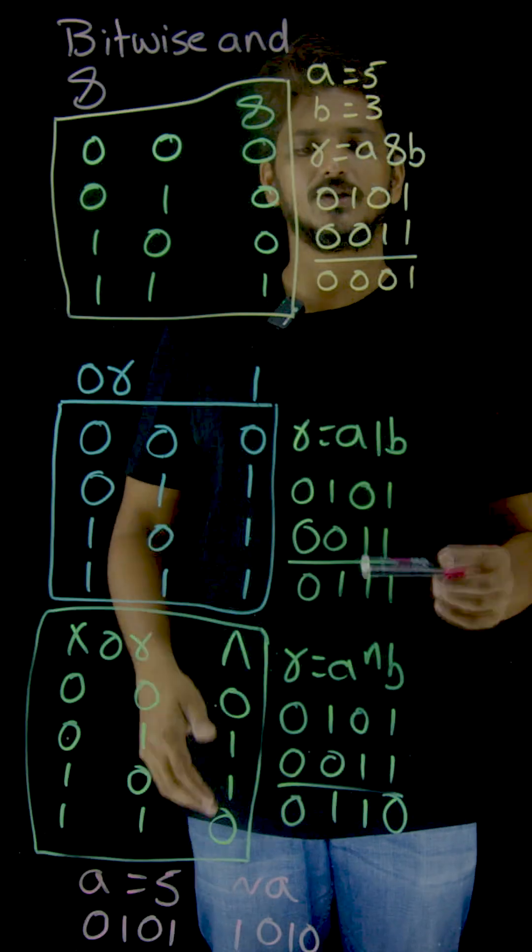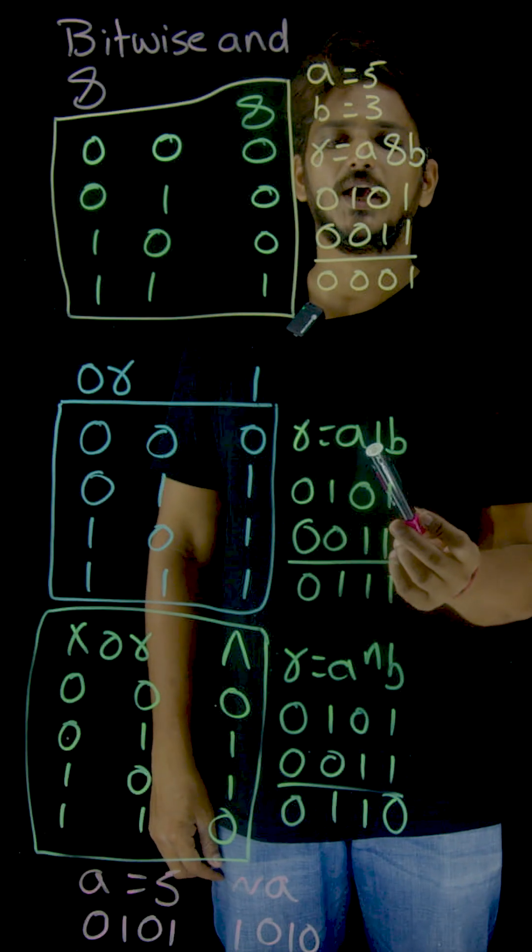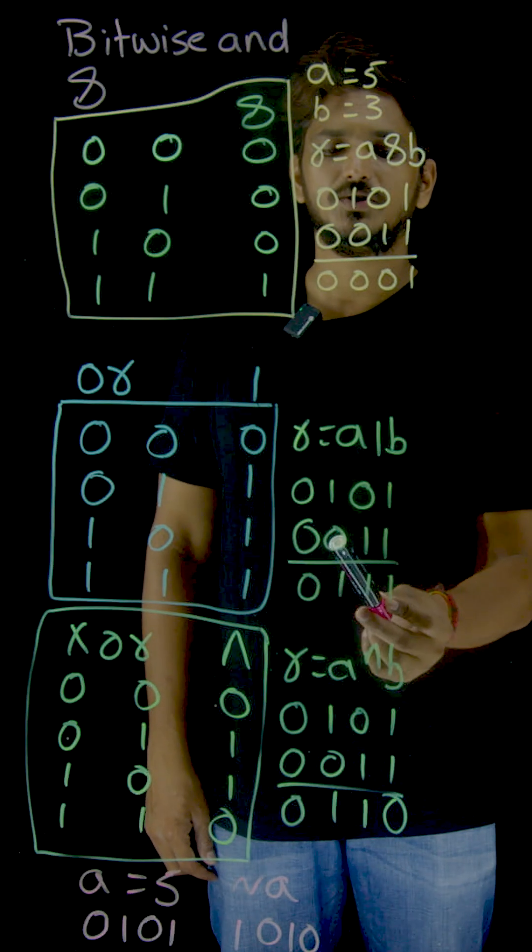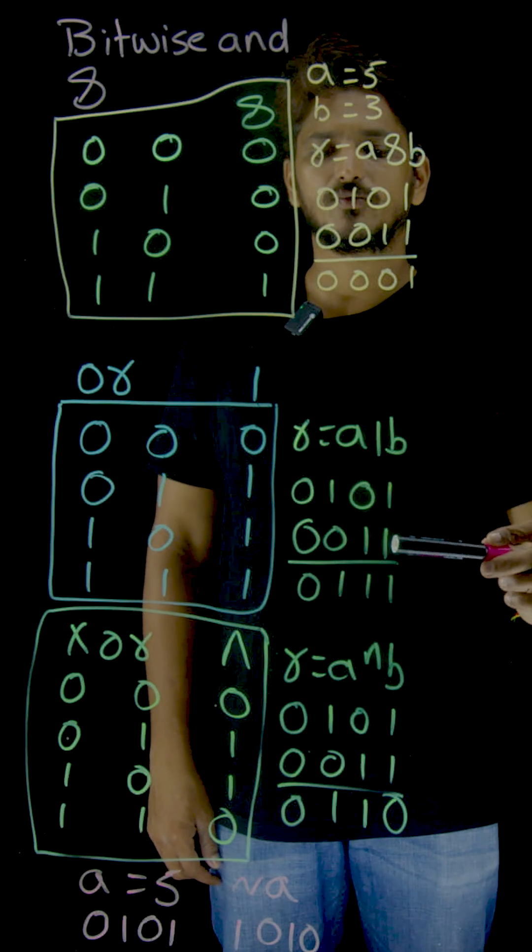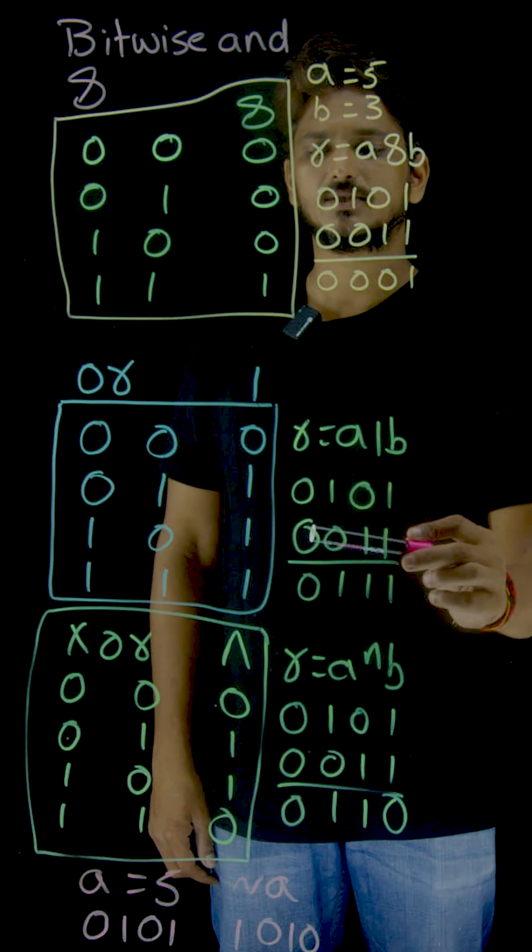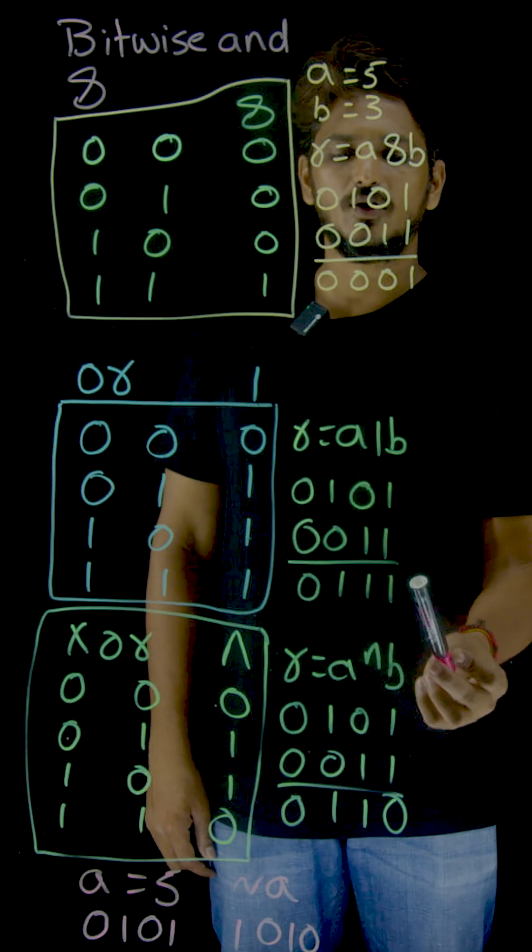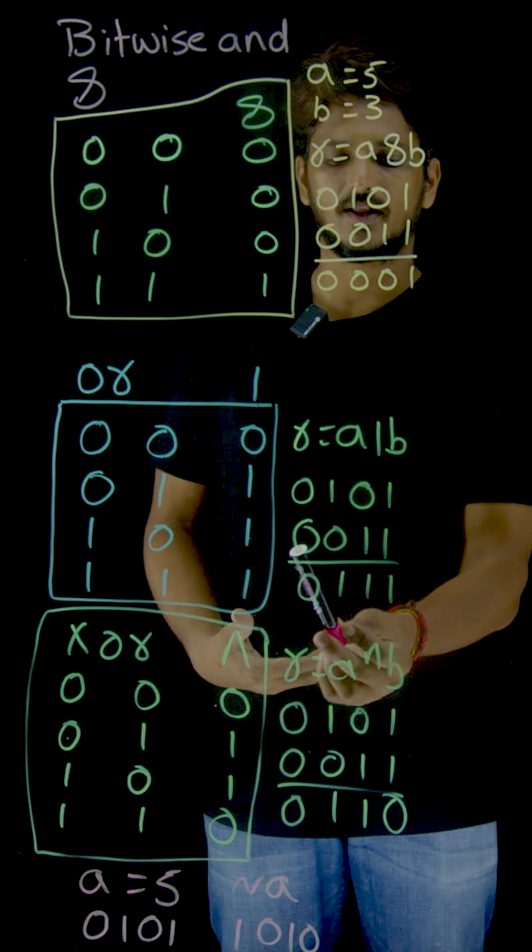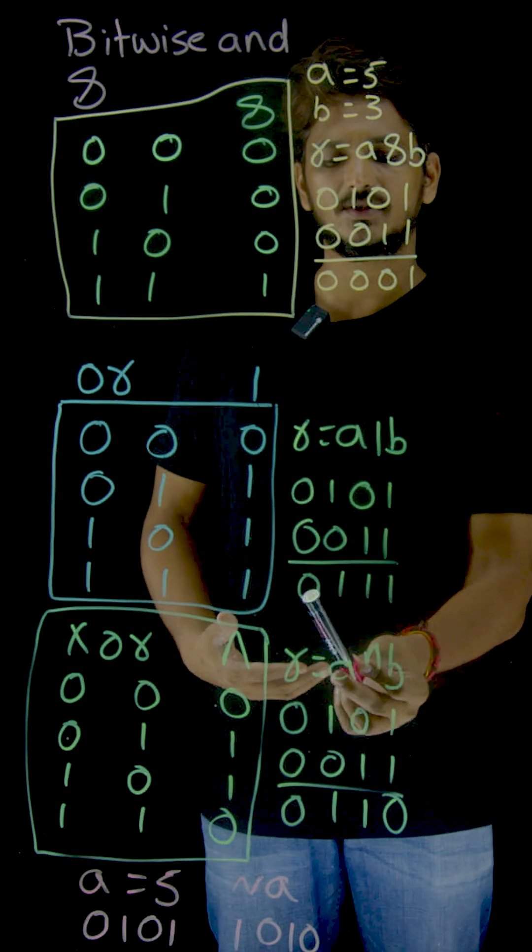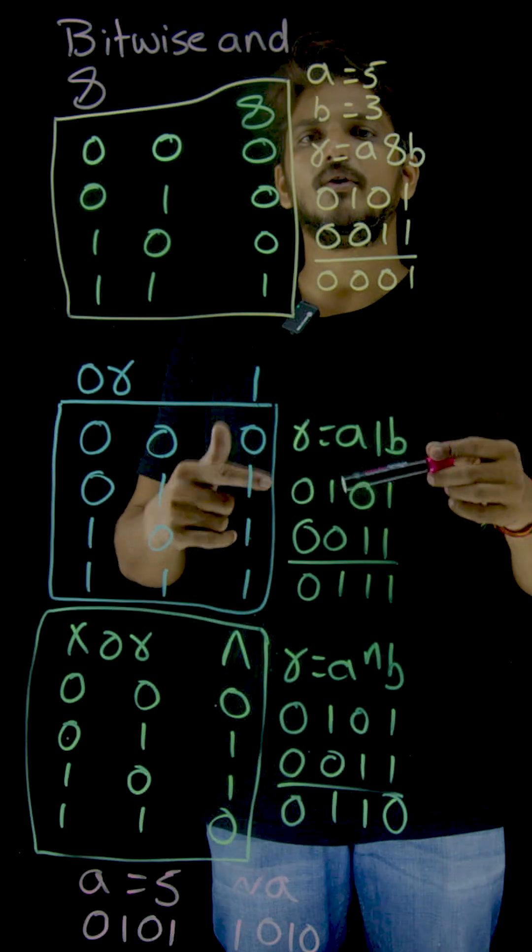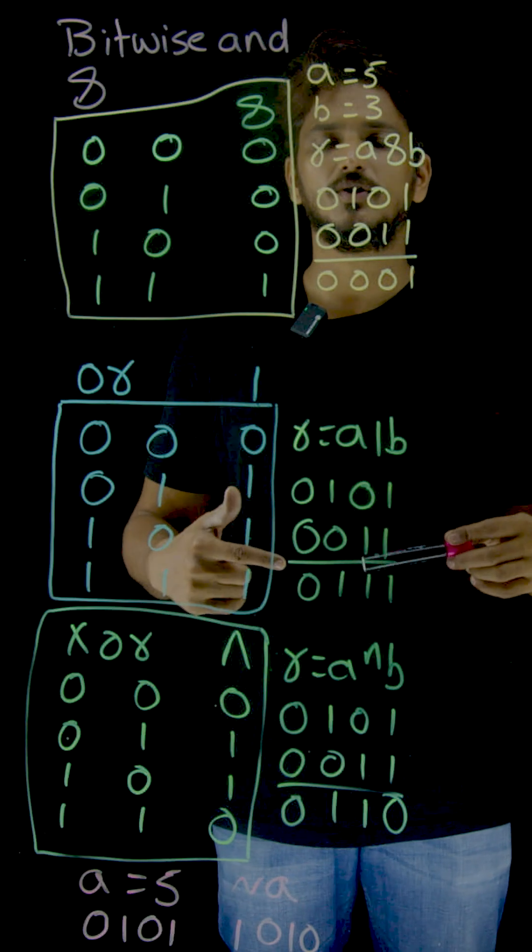Now try to understand with a real-life example: R equals A OR B. A means 0101, B means 0011. 1 OR 1 equals 1. 0 OR 1 equals 1. 1 OR 0 equals 1. 0 OR 0 equals 0. So what is the value of this? Binary number. This binary number when you convert it to decimal is 7. So the R value contains 7. 5 OR 3, you are going to get 7.